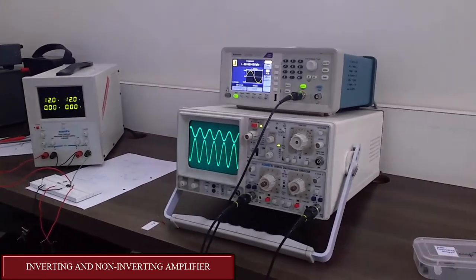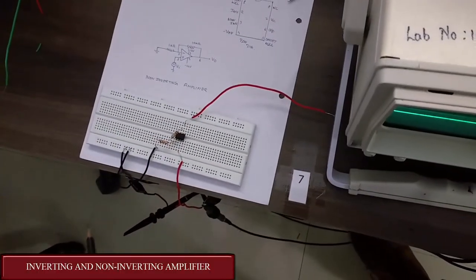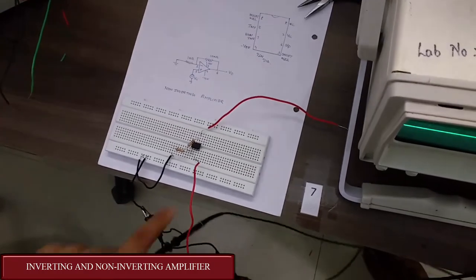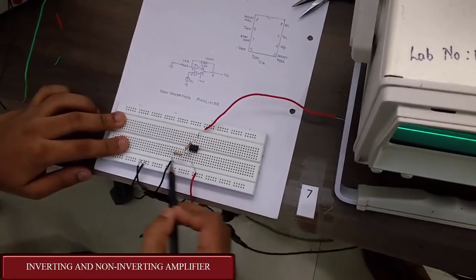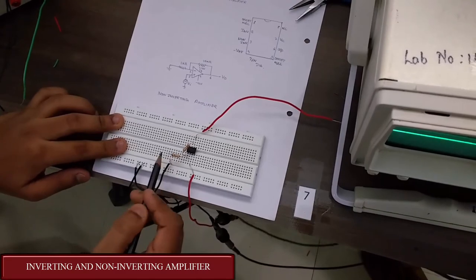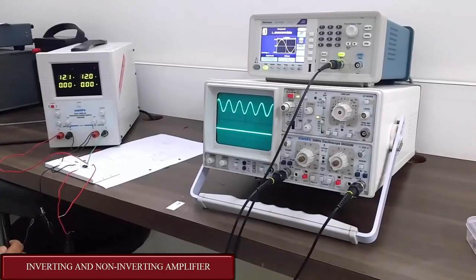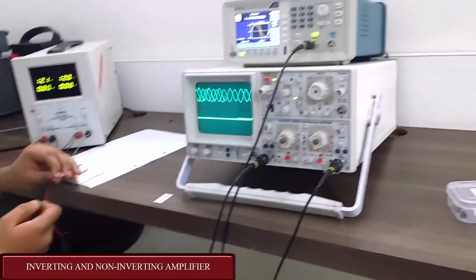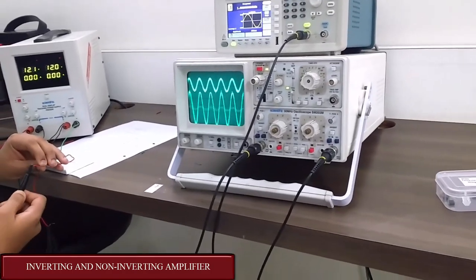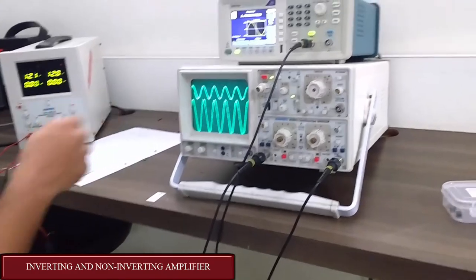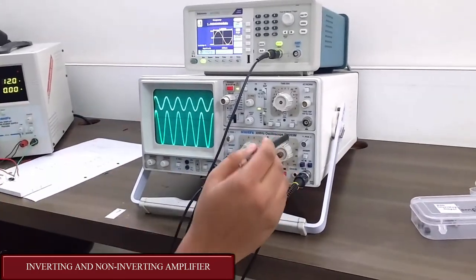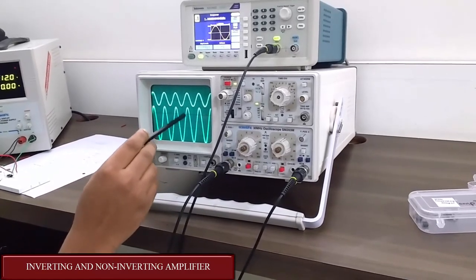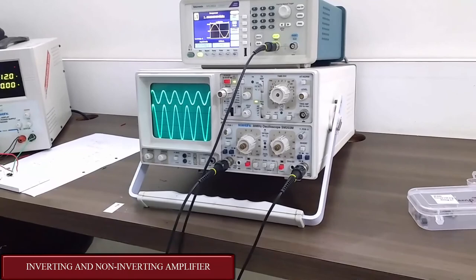Now let us implement the non-inverting amplifier. In this, the input is applied at pin 3 and pin 2 is grounded through a resistor. In order to check the output, the pin 6 wire is connected to channel 2 of the CRO. The output is obtained — since it is at 0.2V, 0.2 into 5, the output obtained is 1V.